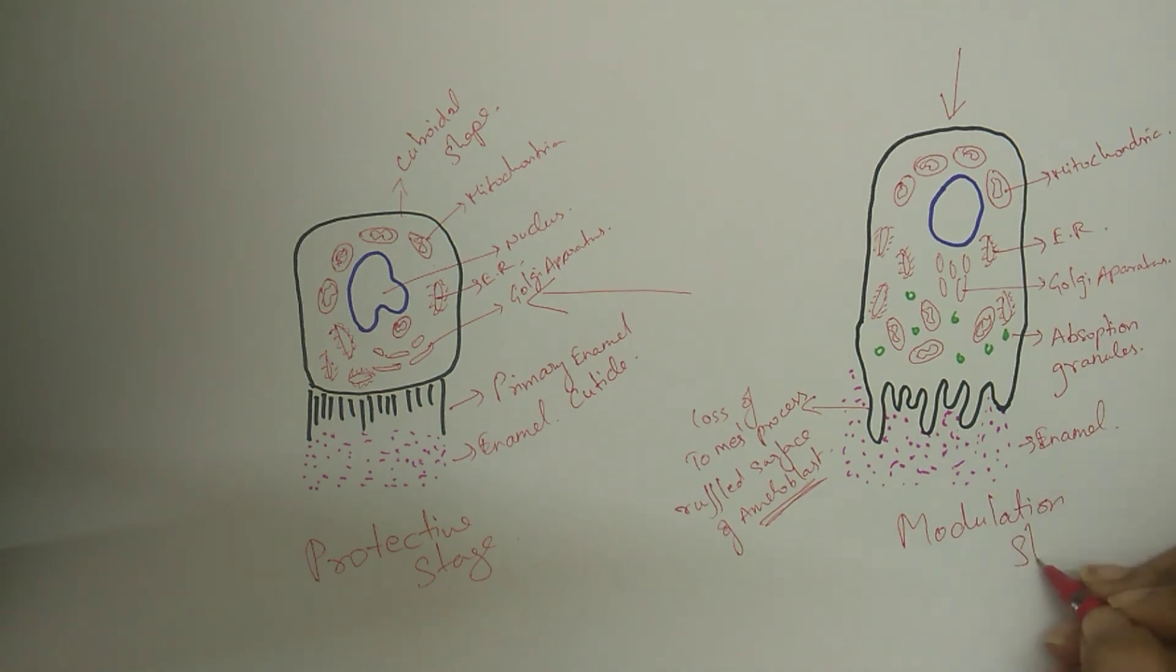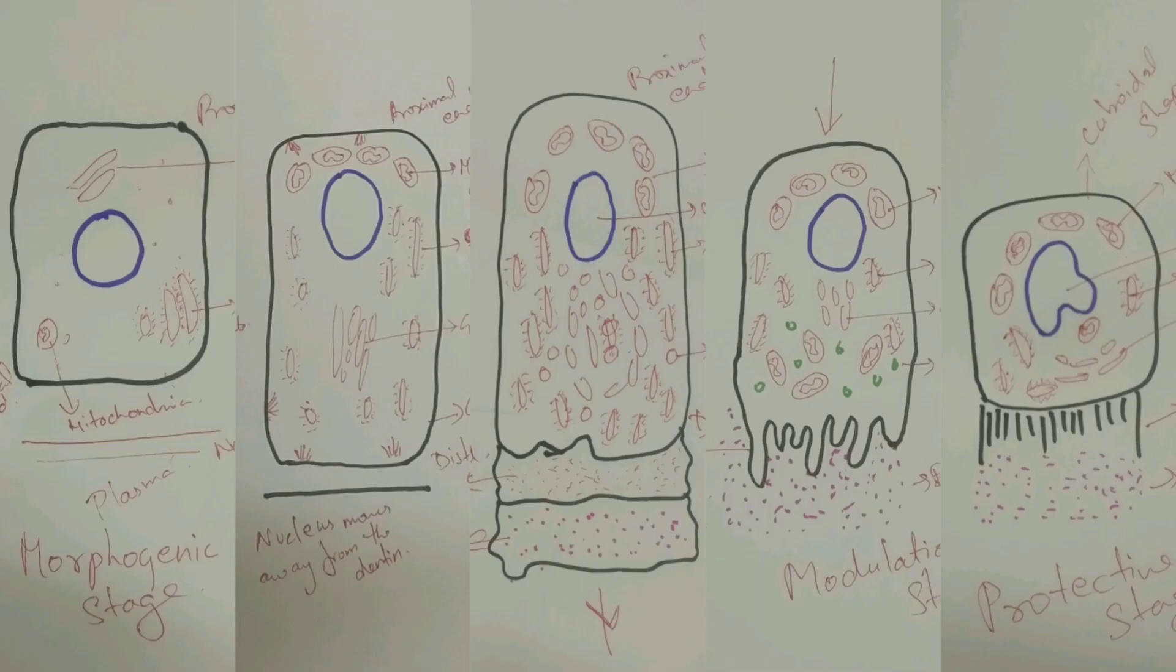Finally, the desmolytic stage, where the reduced enamel epithelium produces enzymes to destroy the overlying connective tissue by desmolysis. This brings about the fusion of reduced enamel epithelium with the oral epithelium and provides an epithelium-lined pathway for the tooth to erupt into the oral cavity without bleeding.